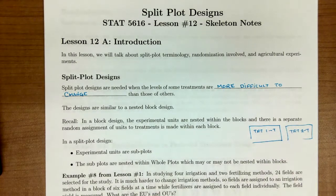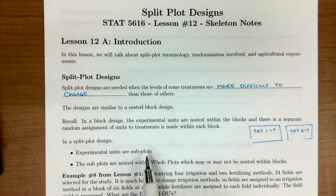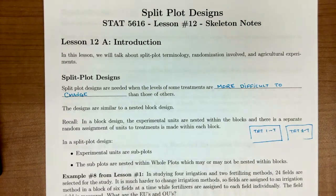In a split plot design, we actually have two experimental units. One experimental unit is the subplot, and the other experimental unit is the whole plot. The subplots are nested within the whole plots, and the whole plots may or may not be nested within the block.